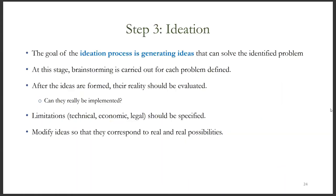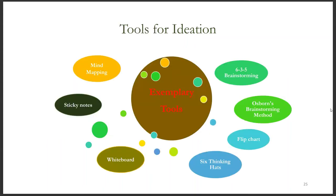The third stage of design thinking is ideation. The goal of the ideation process is generating ideas that can solve the identified problem. At this stage, brainstorming is carried out for each problem defined. After the ideas are formed, their feasibility should be evaluated — limitations, whether technical, economic, or legal, should be specified. Modify ideas so that they correspond to real possibilities. A wide variety of tools are available to aid in the process of ideation. These include different types of brainstorming, mind mapping, flip charts, thinking hats, and others.